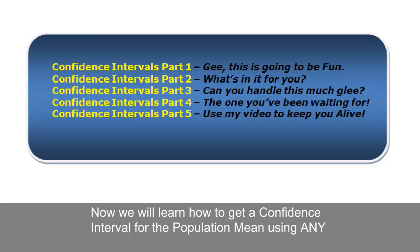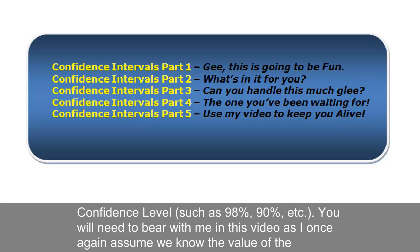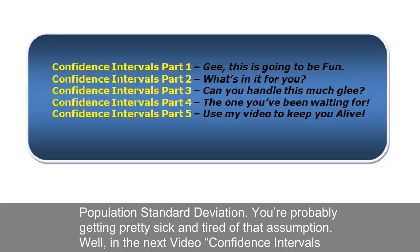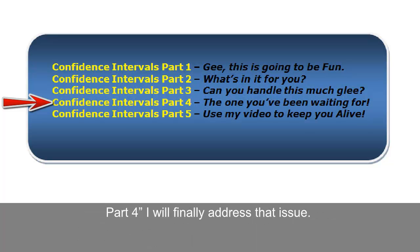Now, we will learn how to get a confidence interval for the population mean using any confidence level, such as 98%, 90%, etc. You will need to bear with me in this video as I once again assume we know the value of the population standard deviation. You're probably getting pretty sick and tired of that assumption. Well, in the next video, confidence intervals part four, I will finally address that issue.